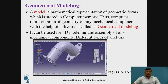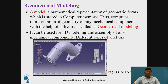So geometrical modeling — what is meant by geometrical modeling? This is the computer representation of any geometrical entity of a mechanical component with the help of different geometrical softwares, which is called geometrical modeling.